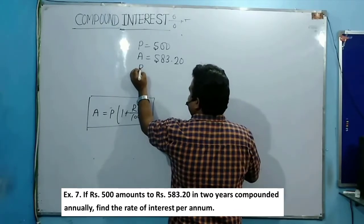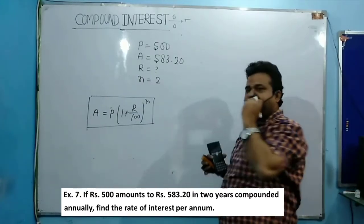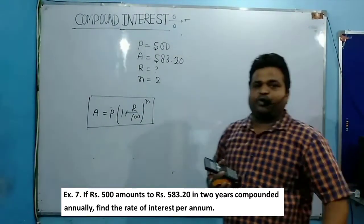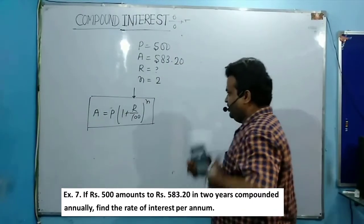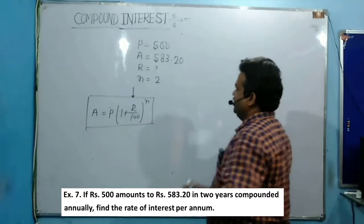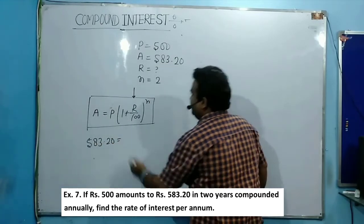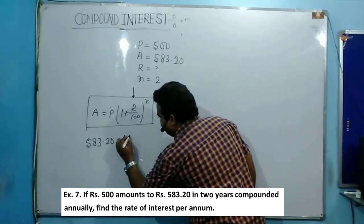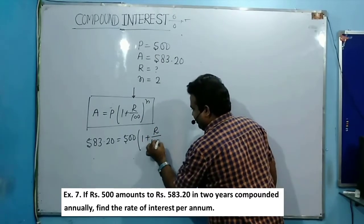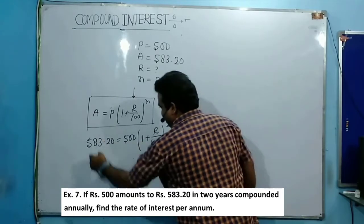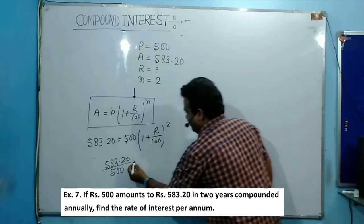The basic formula is the same. I am going to calculate the r value by putting all values into the compound interest equation. 583.20 is equal to 500 × (1 + r/100)² . Dividing both sides: 583.20 divided by 500 is equal to (1 + r/100)².